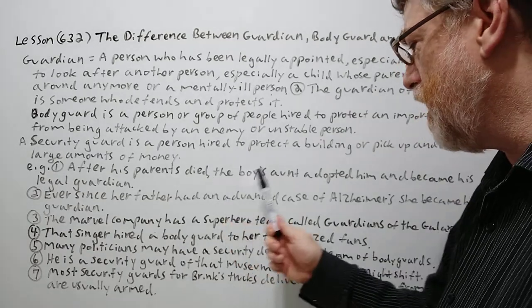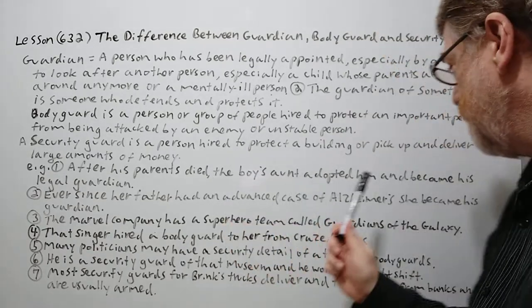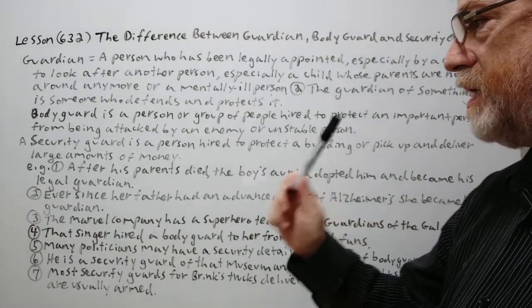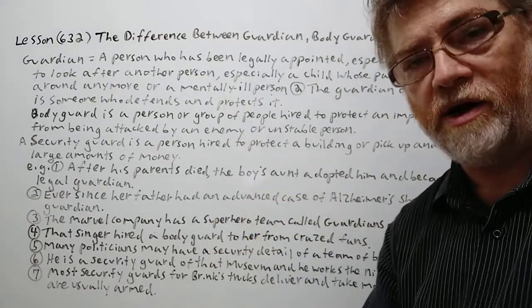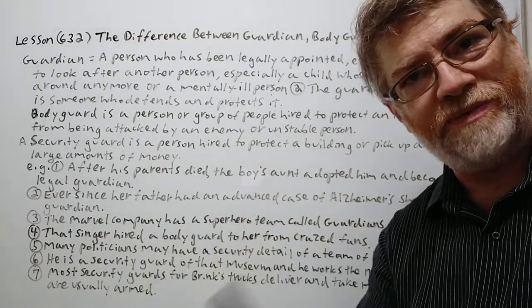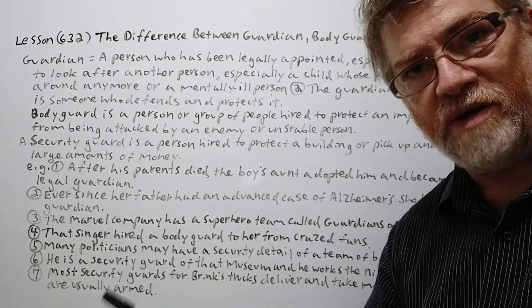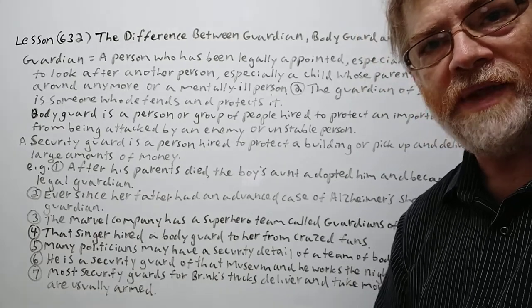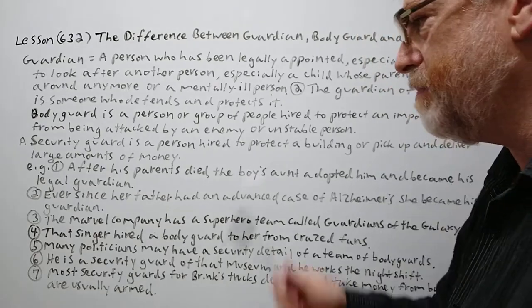After his parents died, the boy's aunt adopted him and became his legal guardian. She became the legal guardian of him — the parents are not around anymore. That's a perfect example of guardian.